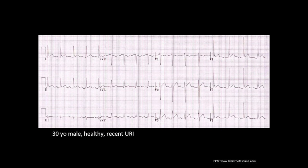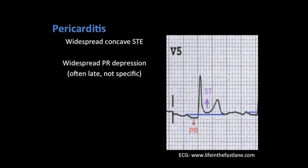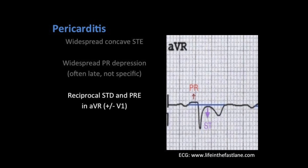Here's our next ECG. This is a 30-year-old male, healthy, with a recent URI — upper respiratory infection. This is kind of your classic patient for pericarditis. Some of the ECG signs of pericarditis include widespread concave ST elevation as well as widespread PR depression. This depression can often be late and it's not very specific for pericarditis, but it's something to look for. Since AVR and V1 connect a little differently sometimes, these changes seen with pericarditis will be opposite or reciprocal in these leads, so we get ST depression and PR elevation.